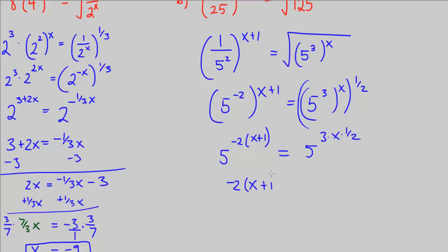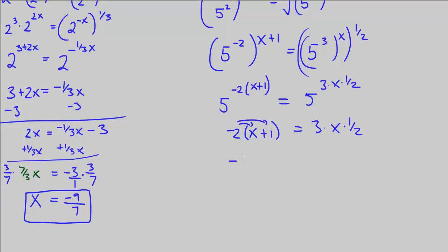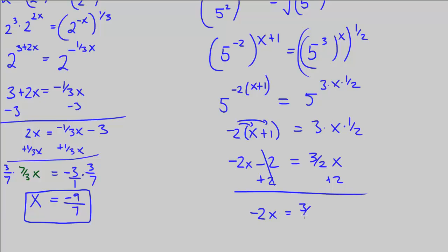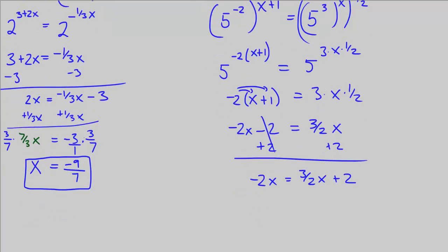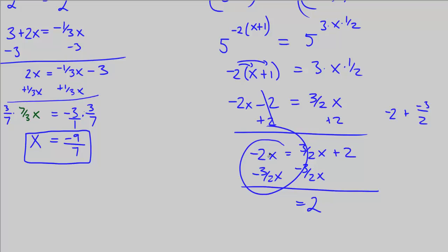Negative 2 times (x plus 1) equals 3 times x times 1 half. Distributing the negative 2 gives negative 2x minus 2, equal to 3 halves x. Adding 2 to both sides: negative 2x equals 3 halves x plus 2. Now subtract 3 halves x from both sides. For negative 2x minus 3 halves x, we need a common denominator: negative 4 over 2 plus negative 3 over 2 equals negative 7 over 2. So we get negative 7 over 2 times x equals 2.